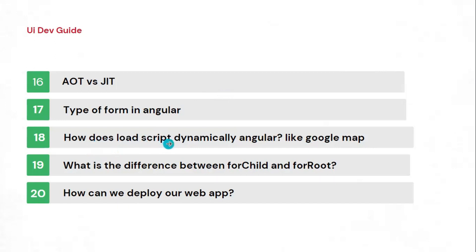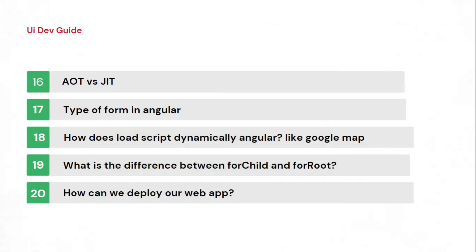This question was asked in two or three interviews: suppose you have an Angular project and you want to load a Google Maps service. They have multiple packages now — you can install angular/google-maps and add that module at the component or module level. You can load the script in index.html, but if they ask you to load the Google Maps script only when a specific component is triggered, you should know how to dynamically add a script tag when that component loads.